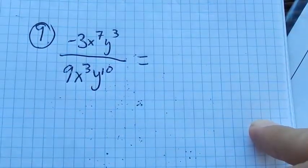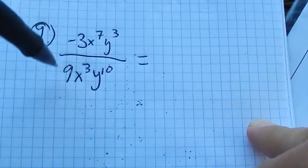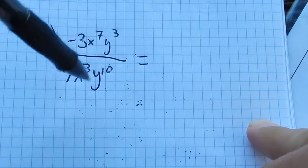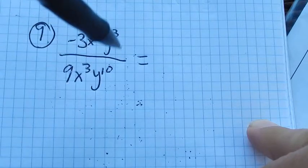So in this, I just think of this as a big fraction. I actually think of it as three fractions at the same time, all multiplied together: negative 3 ninths, x to the 7th over x cubed, y cubed over y to the 10th.